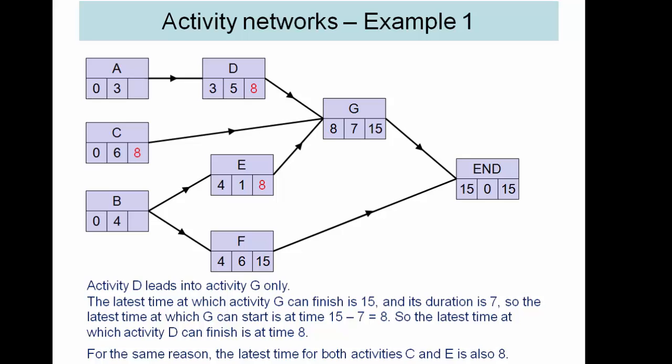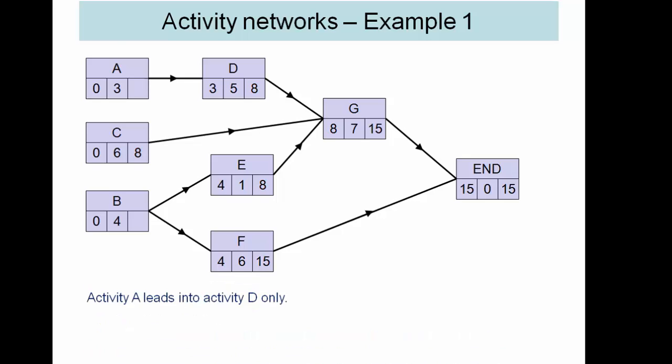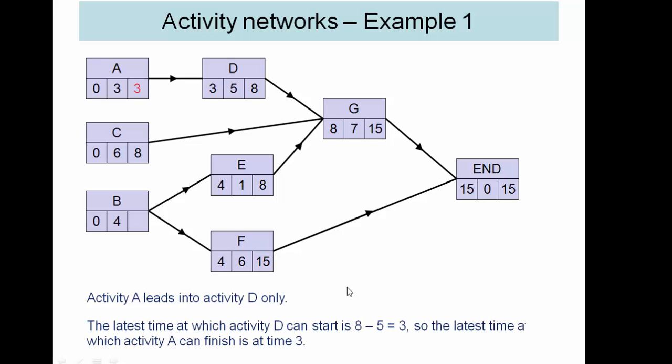Okay, now hopefully you can follow this. It's fairly self-explanatory. See here what we're doing is we're subtracting the length of the activity from this. So we can see here that A's late time is three.